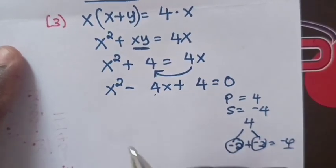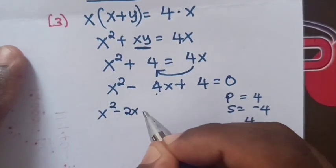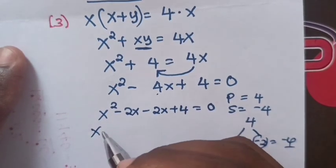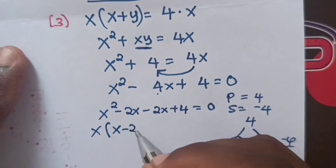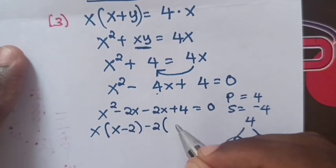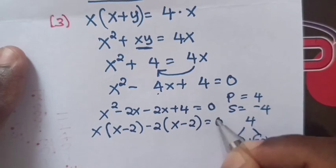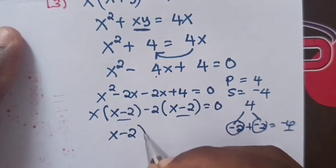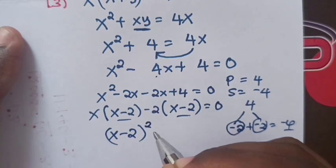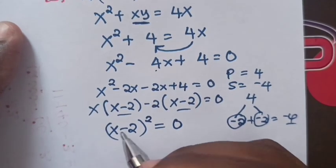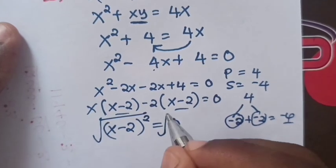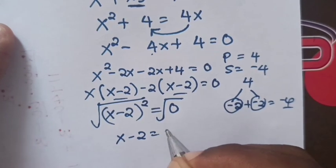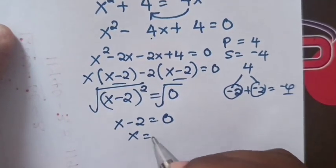To factor, we use negative 2 and negative 2, since negative 2 times negative 2 equals 4 and negative 2 plus negative 2 equals negative 4. So the equation becomes x squared minus 2x minus 2x plus 4 equals 0, which factors as x times (x minus 2) minus 2 times (x minus 2) equals 0, giving (x minus 2) squared equals 0. Applying a square root to both sides, x minus 2 equals 0, therefore x equals 2.